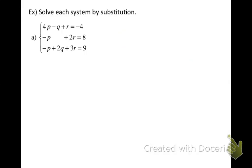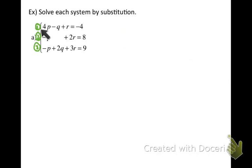Let's remind you of some things I'd like you to do with these three-variable systems. One of those is organization. I'd like you to label each of the original equations as equation one, two, and three — I do that by putting the number in a circle — so it's easy to refer to that equation later on. I always personally look for a place where I have a coefficient of positive one for a specific variable. In the first equation, this is the only place where you'll find a variable with a coefficient of positive one.